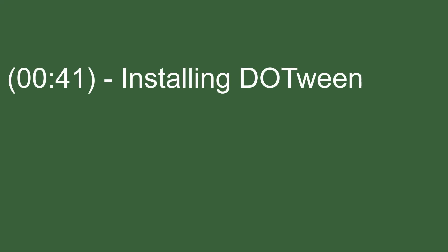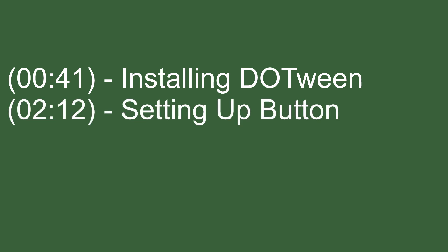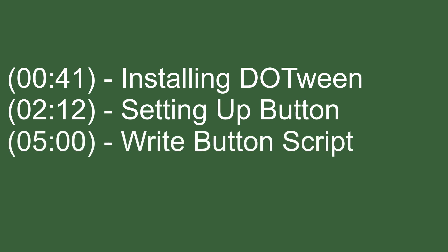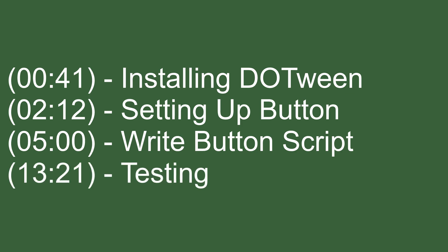This video is split up into four steps. Step one, we'll be installing DOTween from the Unity Asset Store — it's a free asset and really simple to get installed. Step two, we'll set up the button and add the text. Step three, we'll write a simple script to detect when the player clicks the button and rotate it using DOTween. Step four, we'll test it and wrap up.